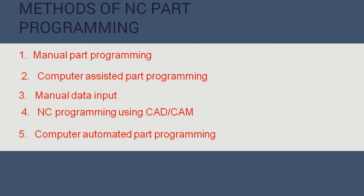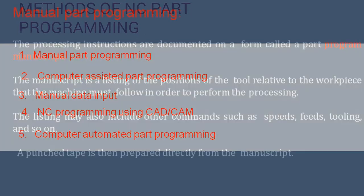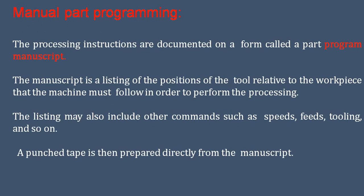First, manual part programming. The processing instructions are documented on a form called a part programming manuscript. The manuscript is a listing of positions of the tool relative to the work piece that the machine must follow in order to perform the processing. The listing may also include other commands such as speeds, feed, tooling, and so on. A punch tape is then prepared directly from the manuscript.